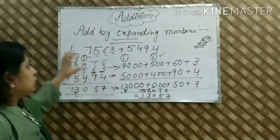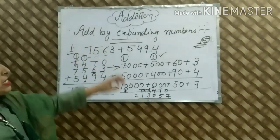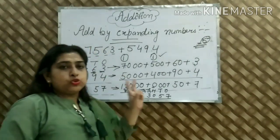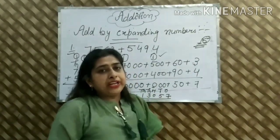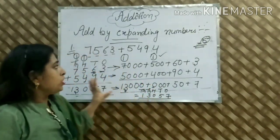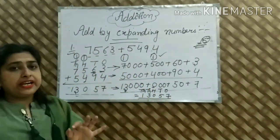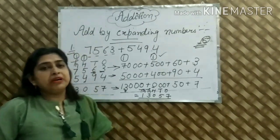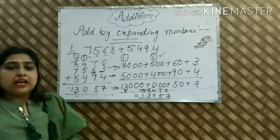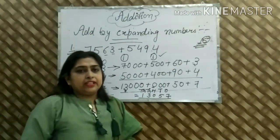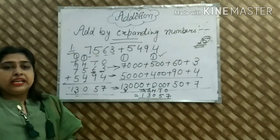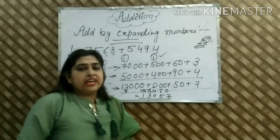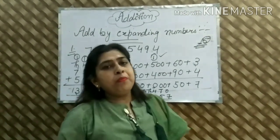So these are the expanding numbers — 2 digits, 3 digits, and 4 digits. If you have any queries related to this topic, you can comment in the comment box. I will see you in the next video. Till then, stay safe, stay home. Bye-bye.